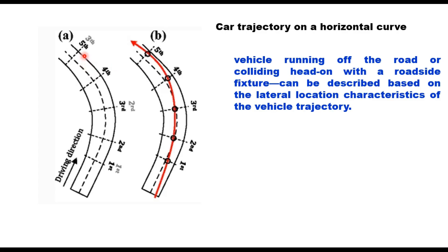Consider a car trajectory on a horizontal curve. The dotted line indicates the center line of the road, and the red path shows the actual path followed by the car. You can see how far the vehicle moves from the center line due to the horizontal curve and centrifugal force. Vehicles running off the road or colliding head-on with a roadside fixture can be described based on the lateral location characteristics of the vehicle trajectory, providing important information about vehicle movement on a horizontal curve.